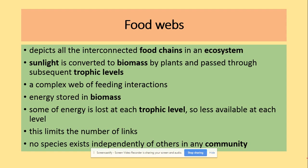Food webs are more complex interconnected food chains within an ecosystem. Sunlight is converted into biomass by plants and passed through trophic levels. Energy is stored as biomass — for example, in the Calvin cycle, GP is reduced to TP, which is used to produce glucose, and more glucose means more biomass. Biomass produced by producers is passed on to the next trophic levels, but because energy is used for respiration and other activities, the number of organisms decreases at higher trophic levels.